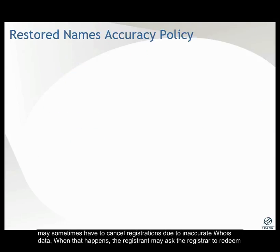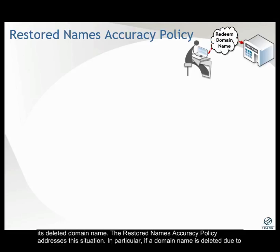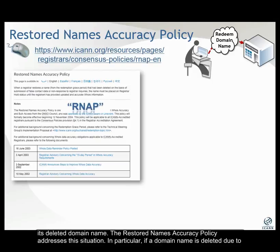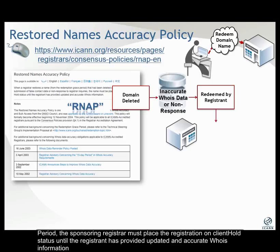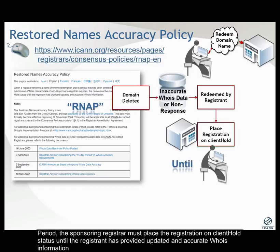We mentioned earlier that registrars may sometimes have to cancel registrations due to inaccurate WHOIS data. When that happens, the registrant may ask the registrar to redeem its deleted domain name. The Restored Names Accuracy Policy addresses this situation. In particular, if a domain name is deleted due to inaccurate WHOIS data or non-response to registrar inquiries and then is redeemed by the registrant during the registration's redemption grace period, the sponsoring registrar must place the registration on client hold status until the registrant has provided updated and accurate WHOIS information.